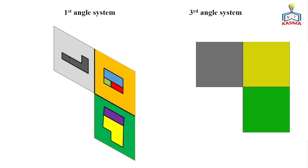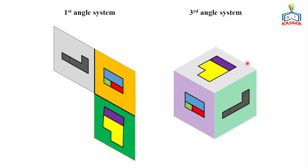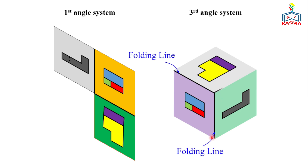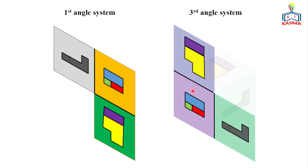Once you rotate that, you get the unfolded result. For the third angle projection, we use two folding lines — the lines that surround the front view, at the intersections of the front view with the other views. The other corner is cut out, and those parts are rotated. Finally, everything is laid flat into the horizontal plane.